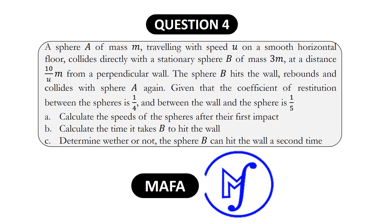The question reads: sphere A of mass m traveling with speed u on a smooth horizontal floor collides directly with the stationary sphere B of mass 3m, at a distance of 10/u meters from a perpendicular wall. Sphere B hits the wall, rebounds, and collides with sphere A again. Given that the coefficient of restitution between the spheres is one quarter and between the wall and the sphere is one fifth: (a) calculate the speeds of the spheres after their first impact, (b) calculate the time it takes B to hit the wall, (c) determine whether or not sphere B can hit the wall a second time.